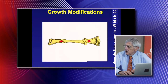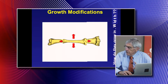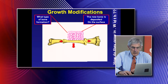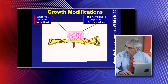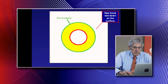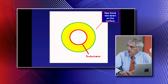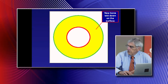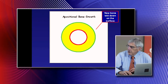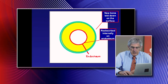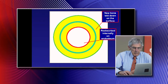How do bones grow in width? It's a surface phenomenon called intramembranous ossification, where new bone is deposited on the surface. We also get reabsorption on the inner surface in the medullary canal. So we have new bone laid down on the periosteal surface, and bone is reabsorbed internally at the endosteum.